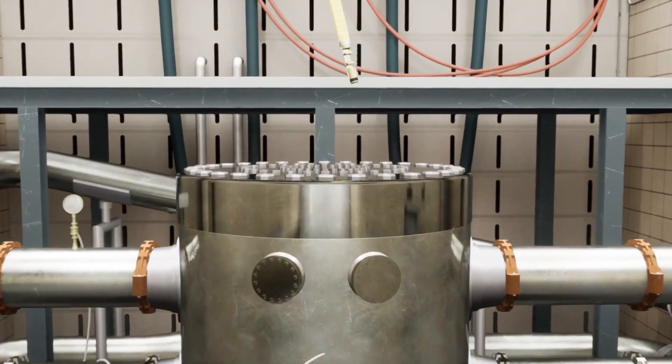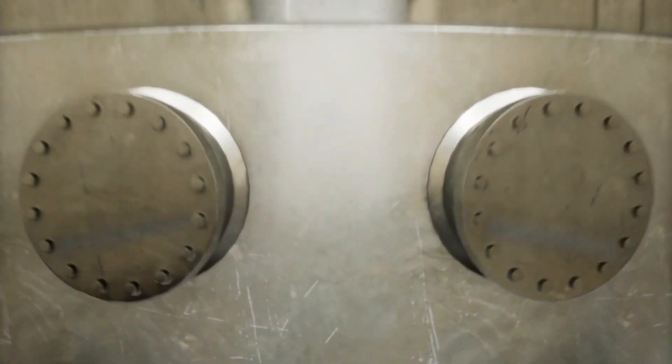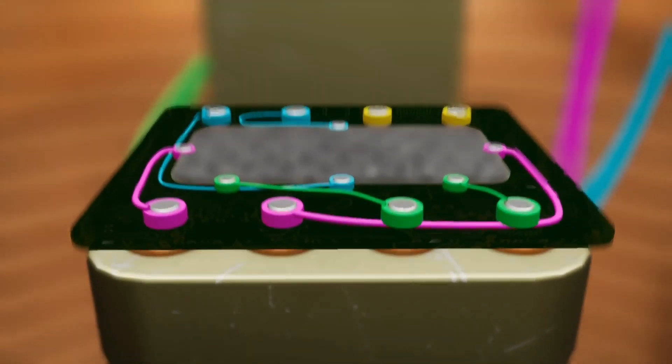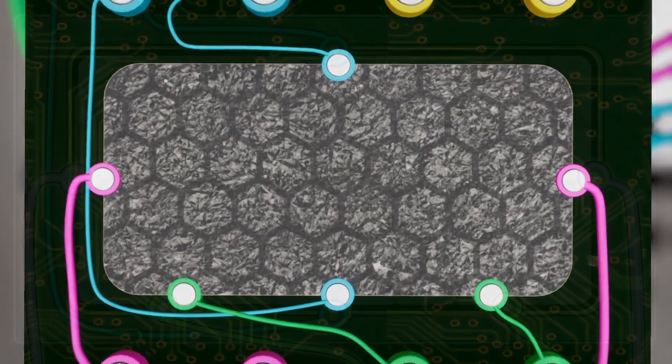Scientists measure all kinds of things using magnets. In this experiment, they are watching what happens to electricity in graphene when it's in a strong magnetic field and when it's very cold.